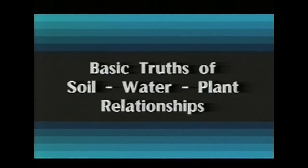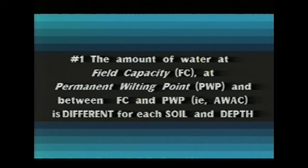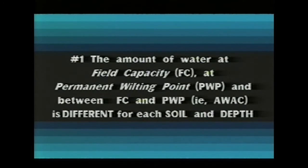Down to some basic truths. Number one: the amount of water at field capacity, at permanent wilting point, and the amount of water between the two points - in other words, available water holding capacity - will be different at every soil type and at each depth. So there's no one common number, and you have to have a handle on the available water holding capacity for a particular design.